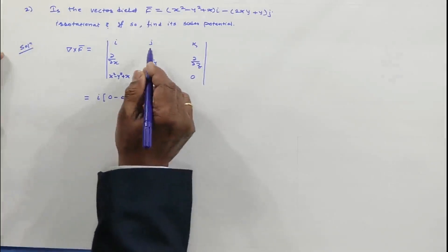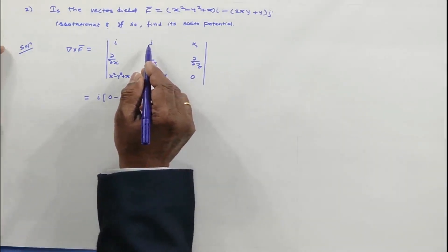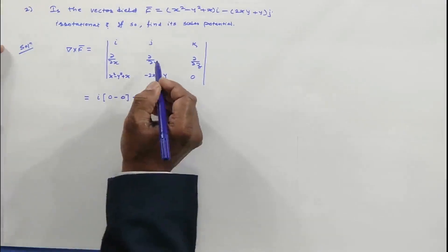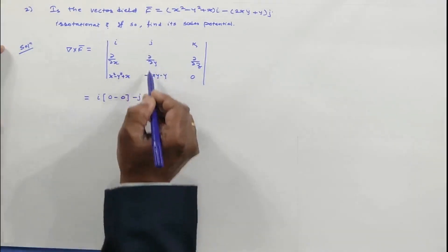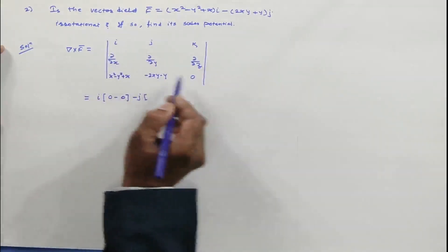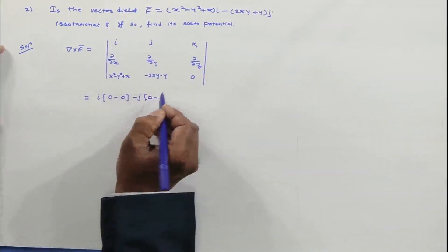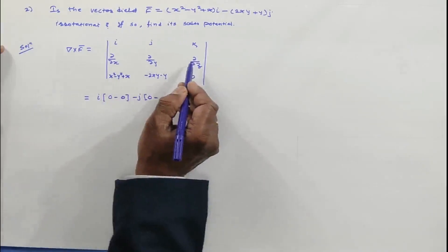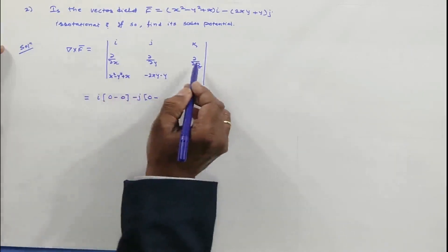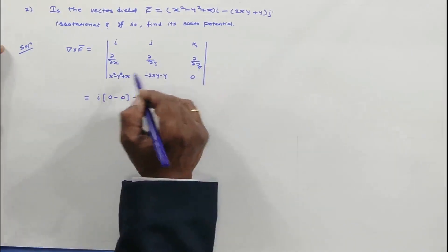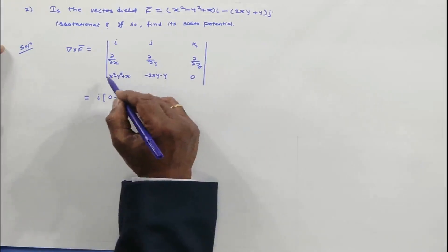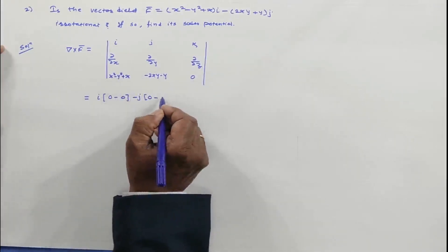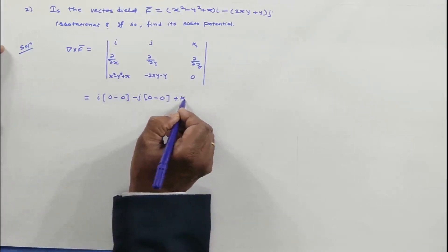For the j component, we put a minus sign by default when solving the determinant. The minor of j: leaving the j column and row, ∂/∂x of 0 is 0, and ∂/∂z of the expression — keeping x and y constant — is also 0, since there is no z term, so the derivative of a constant is 0.